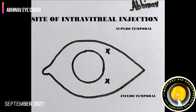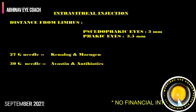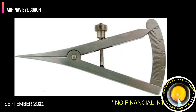The distance from the limbus in pseudophakic eyes should be kept at 3 mm, and in phakic eyes it should be kept at 3.5 mm. Usually we use a 26 gauge needle for Kenalog and Macugen, and a 30 gauge needle for Avastin and antibiotics.